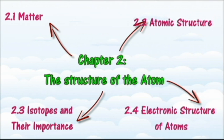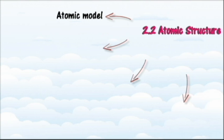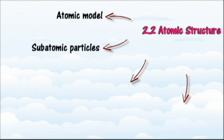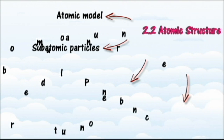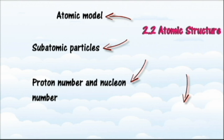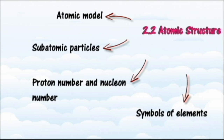In section 2.2 we will learn about atomic structure. At the end of this section you should be able to: describe the development of the atomic model, state the subatomic particles in an atom and their relative charge and relative mass, define proton number and nucleon number, determine the proton number and nucleon number of an atom, determine the number of protons, neutrons and electrons from the proton number and nucleon number, write the symbols of an element, and construct the atomic structure.